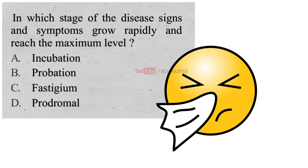In which stage of the disease do signs and symptoms grow rapidly and reach the maximum level? A. Incubation, B. Probation, C. Fastigium, D. Prodromal. And the correct answer is C. Fastigium.